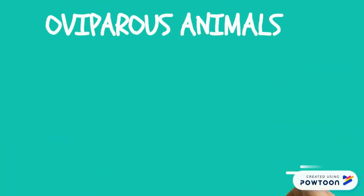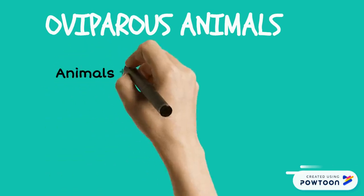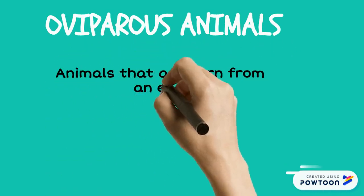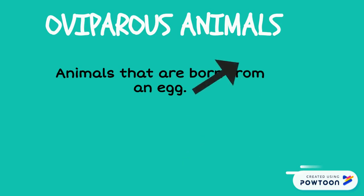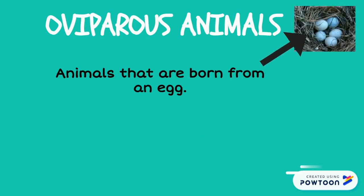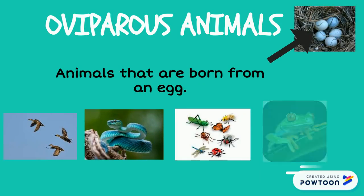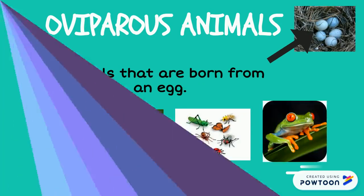Oviparous animals are animals that are born from an egg. Like for example, birds, snakes, insects, frogs.